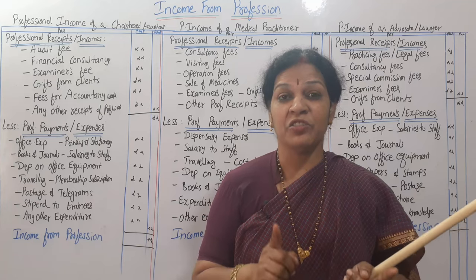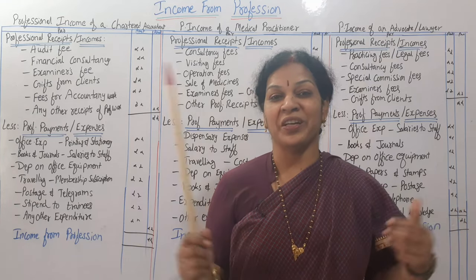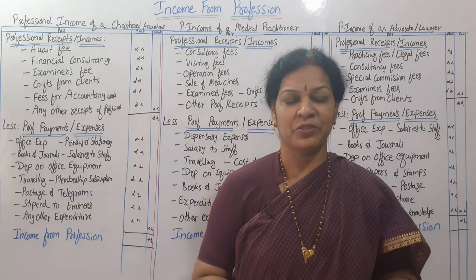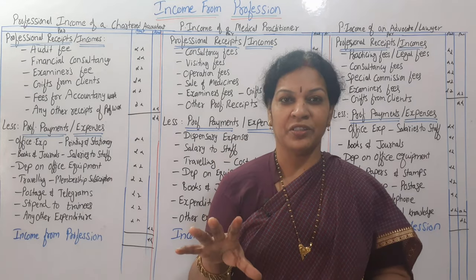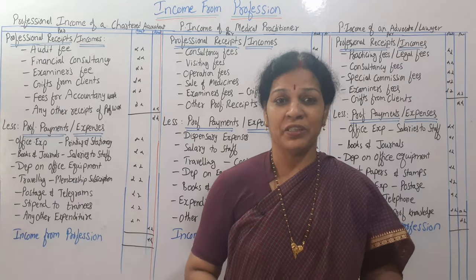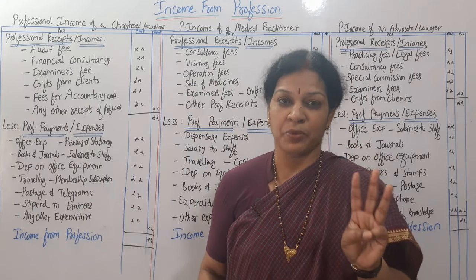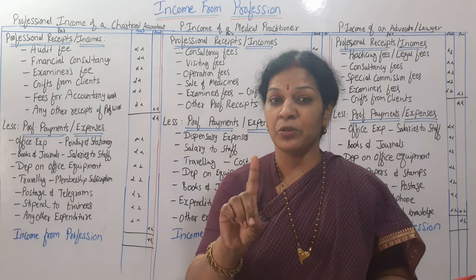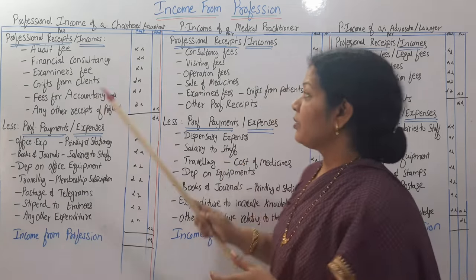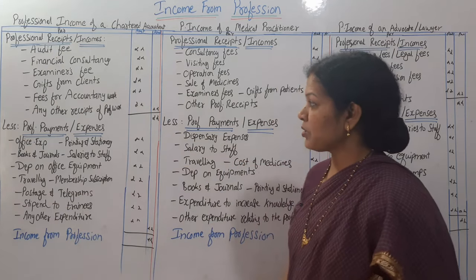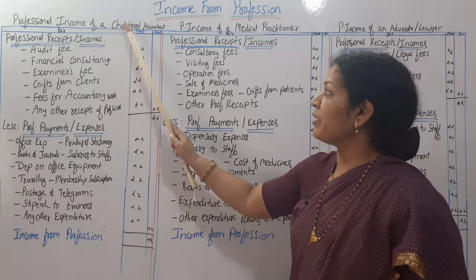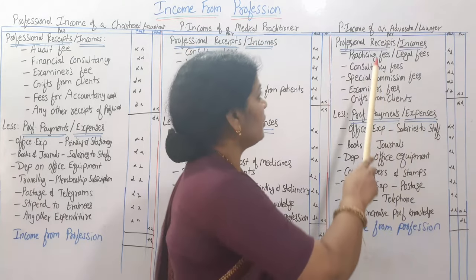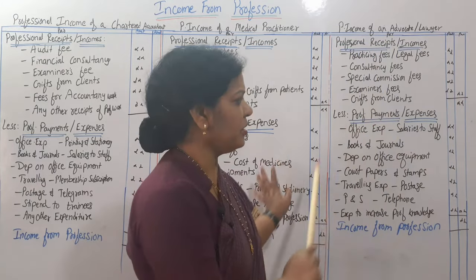By the way, watch this video on a computer to understand it properly — on a phone the text will appear too small. Now let me tell you the proforma. To calculate professional income, I have taken three kinds of proformas: one for chartered accountant, one for medical practitioner (any doctor), and one for advocate or lawyer.